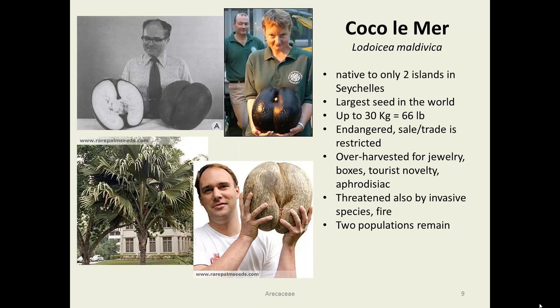Now for something completely different: the coco de mer, which means coconut of the ocean — Lodoicea maldivica — is the largest seed in the world. It can weigh up to 65 pounds. Looking at the pictures, the people are pretty impressed by the size of that seed. Because it's so novel, it has become endangered and its sale and trade is now restricted. However, there is still a black market, so these plants remain under threat. They have been overharvested due to tourist novelty, and they are made into boxes, umbrella stands, and various unusual structures.